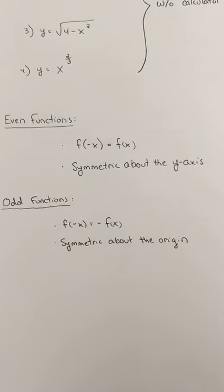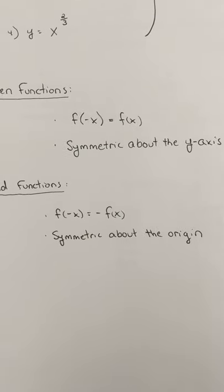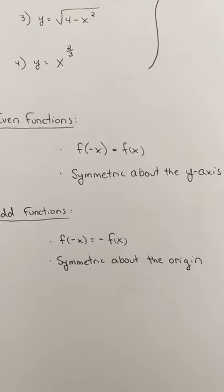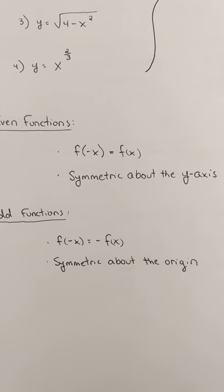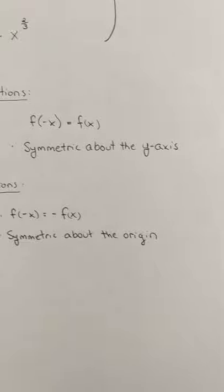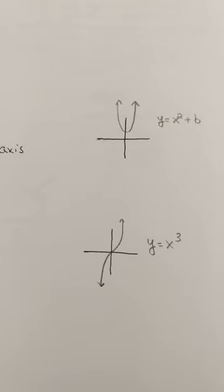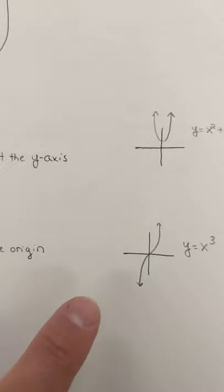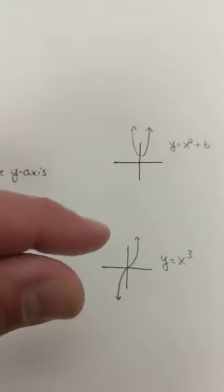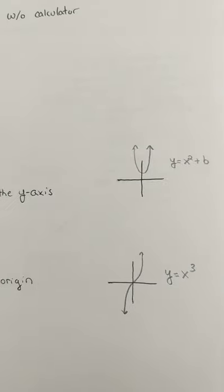Odd functions mean that when you plug in the negative of an output, the function you get back is just the negative of the function that you had. So it's symmetric about the origin. So y equals x cubed would be the example of it's symmetric about the origin, because if we were to kind of rotate it, we would have the same function.